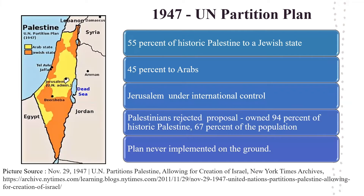Following the end of the Second World War, the newly formed United Nations proposed a plan that would grant 55% of historic Palestine to a Jewish state and 45% to Arabs. Jerusalem would remain under international control. As can be seen in the map, the yellow portion was meant for Arabs and the orange one for Jews. Palestinians rejected the proposal because it stripped away much of the land that was under their control. During that time, they owned 94% of historic Palestine and comprised 67% of the population.